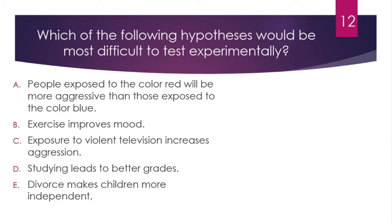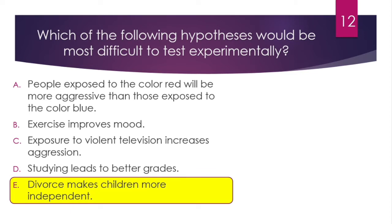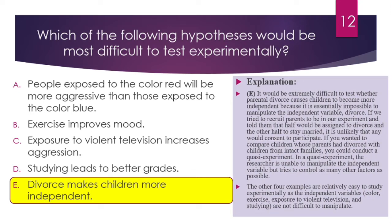Question number 12. Which of the following hypotheses would be most difficult to test experimentally? The answer is E — 'Divorce makes children more independent.' To test this experimentally, we would need to assign parents to divorce, which is not ethical and essentially impossible to manipulate as an independent variable. We would try to recruit parents and tell them that half would be assigned to divorce and the other half to stay married — it is unlikely that any would consent to participate.